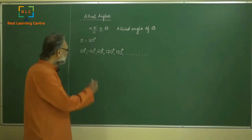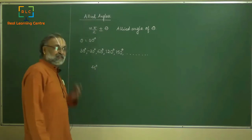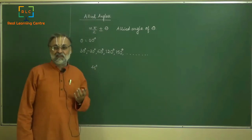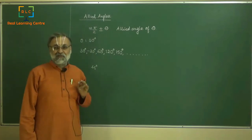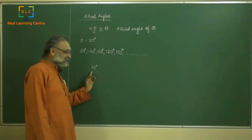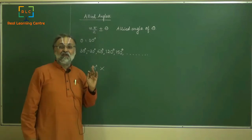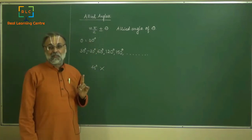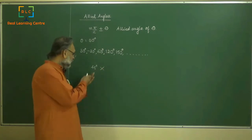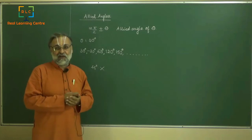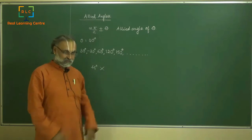Now, suppose if I take 45 degrees — this 45 degrees can never be expressed using the formula n·π/2 ± 30°. Therefore, 45 degrees is not an allied angle of 30 degrees. However, there may be some other angles which can be allied angles of 45. This is one very important concept.